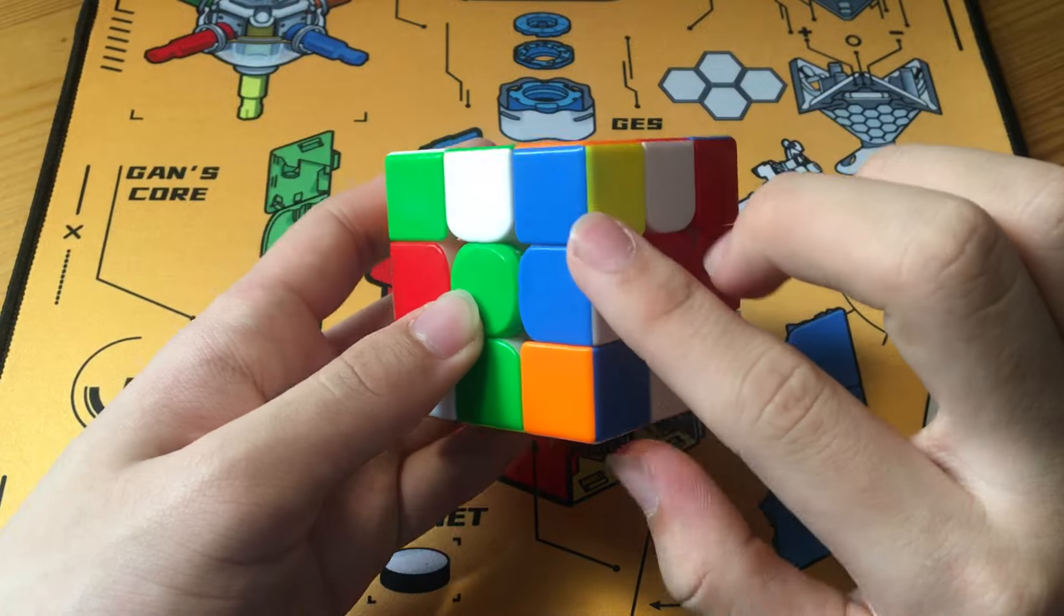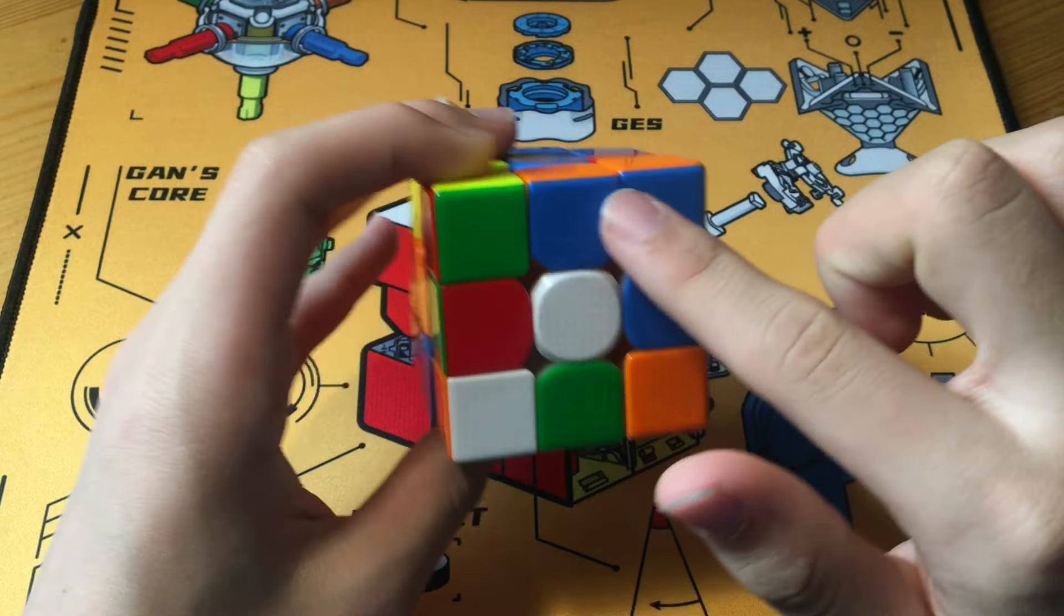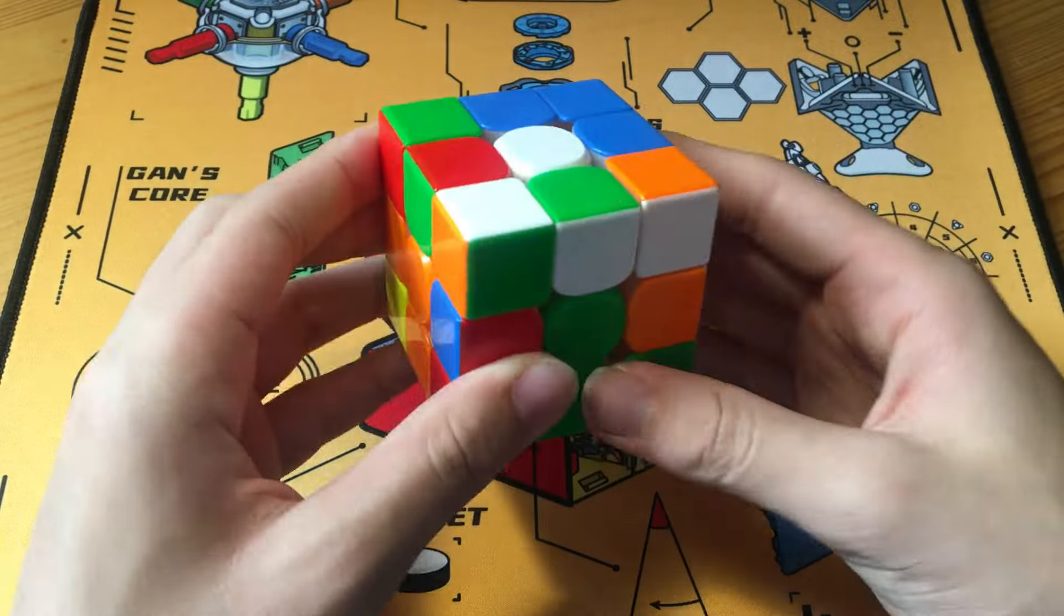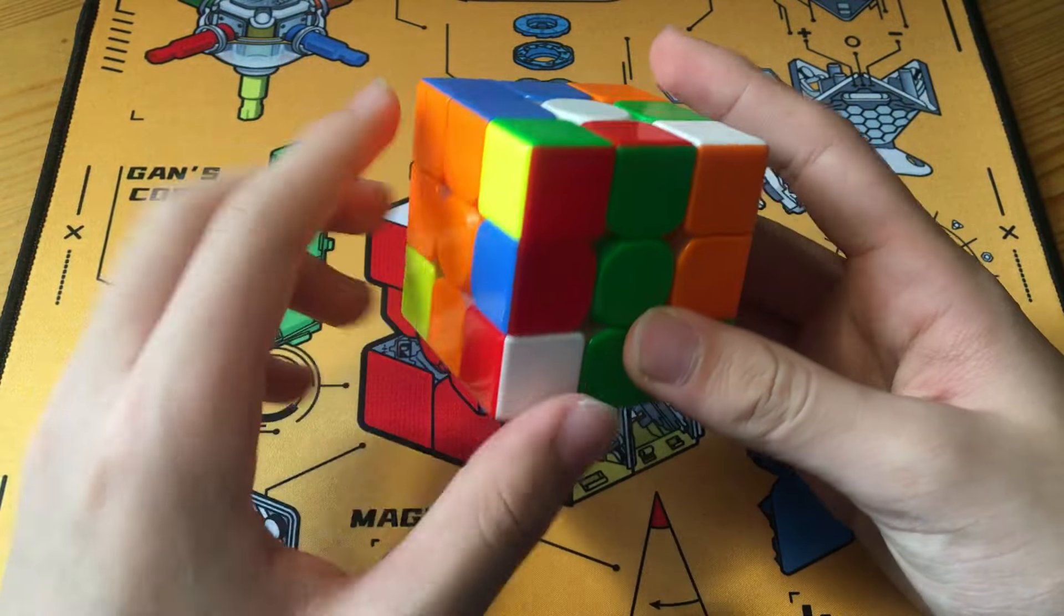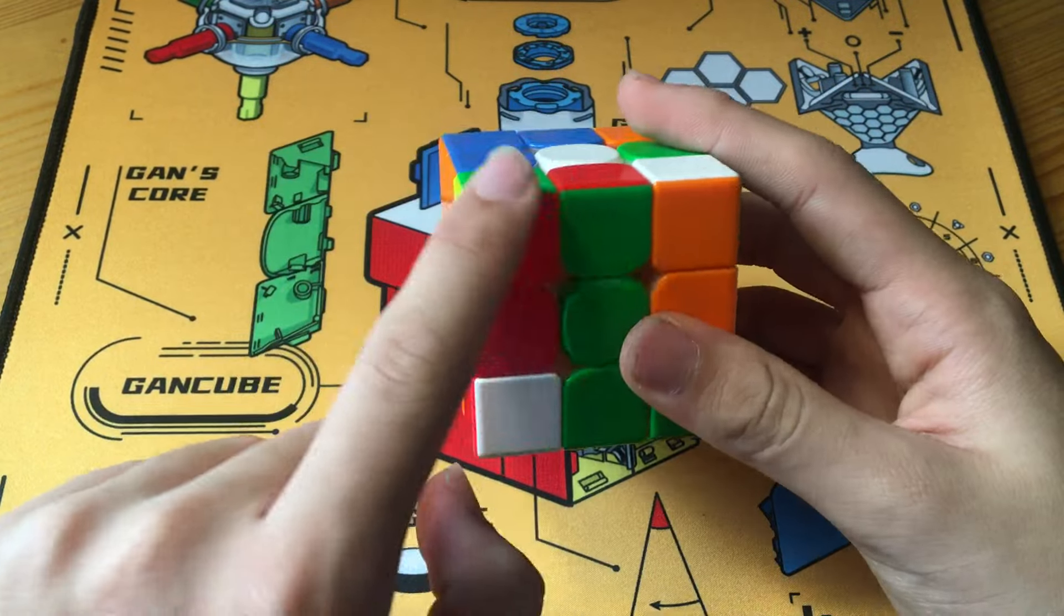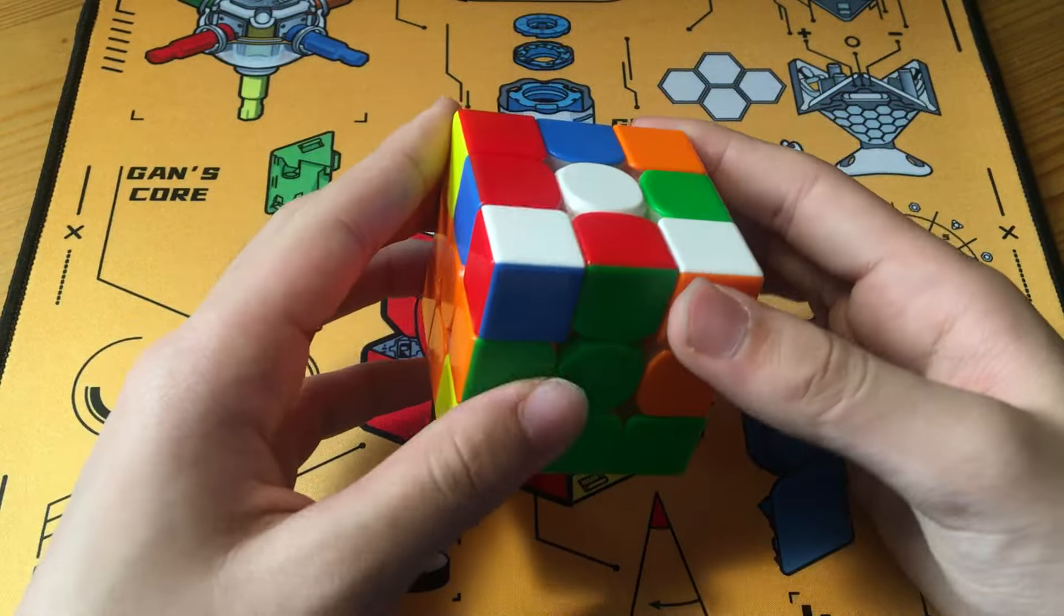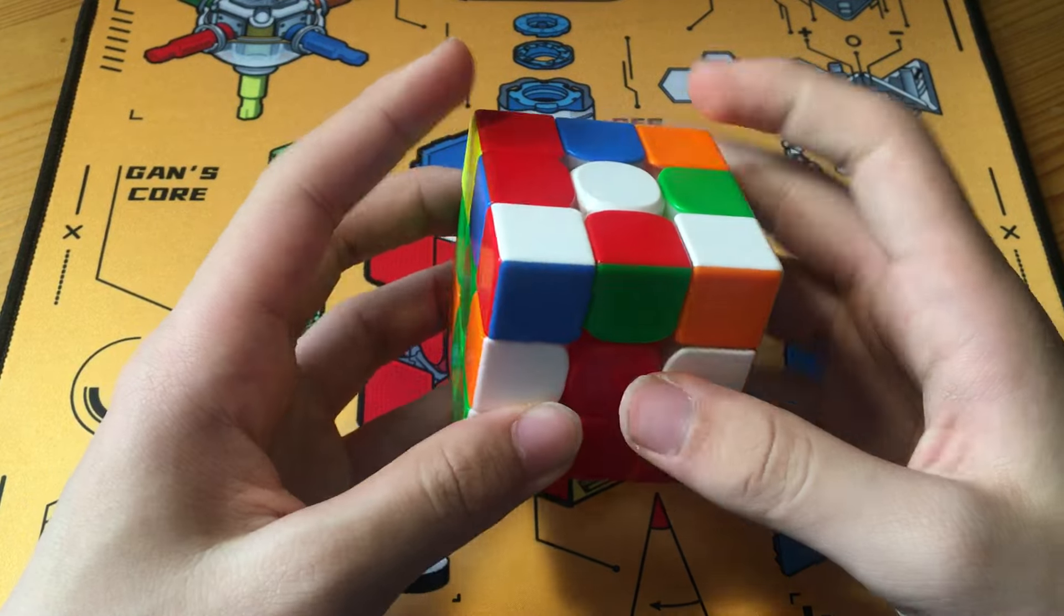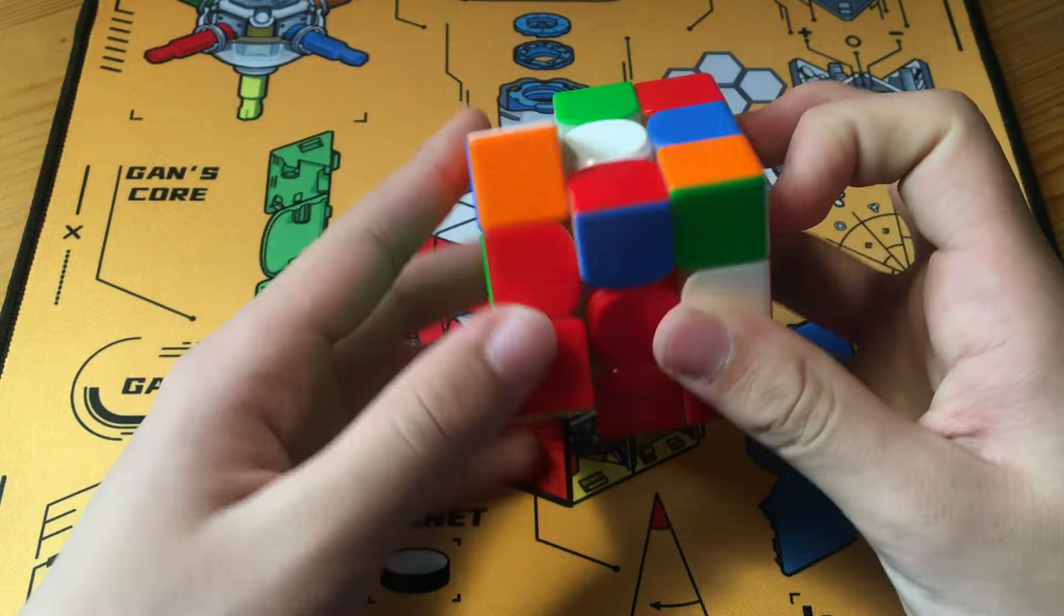but you can insert a U move to pair these two up in the back, and insert a U' move to pair this up into a block also at the back, like so. And here we notice our second pair immediately. So we just do a YD' and solve these two.